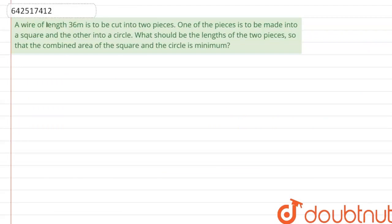Hello everyone, let's start the question. The question says that a wire of length 36 meters is to be cut into two pieces. One of the pieces is to be made into a square and the other into a circle. What should be the length of the two pieces so that the combined area of the square and the circle is minimum?